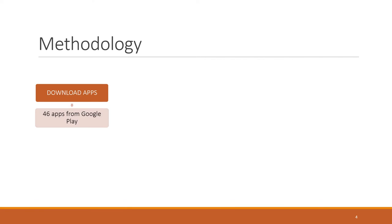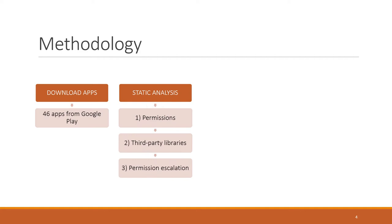This is the methodology we follow to study parental control applications on Android. First, we download applications by going to Google Play and doing a free text search using the term 'parental control apps.' We look at the description of all applications in the results, and check whether they have restriction or monitoring capabilities. If they do, we add them to our dataset, ending up with 46 applications. Then we run static analysis on different releases of these 46 applications: we look at permissions requested across releases, third-party libraries embedded, and permission escalation — meaning we check whether, when a given permission is used, the responsible party is the application, a third-party library, or both.